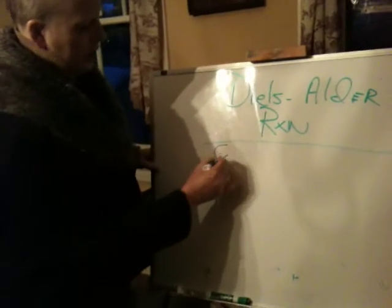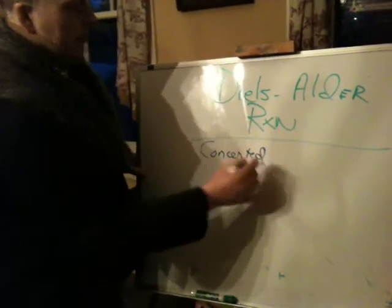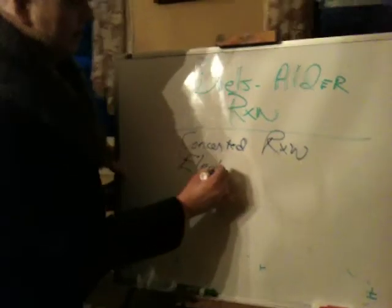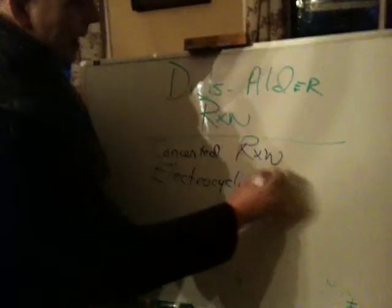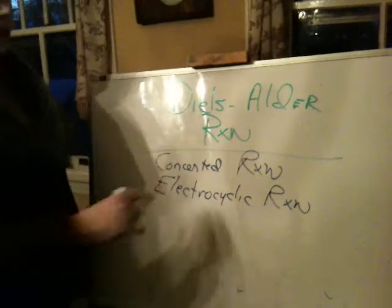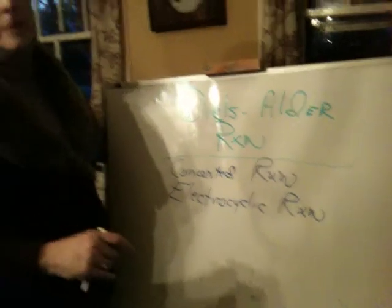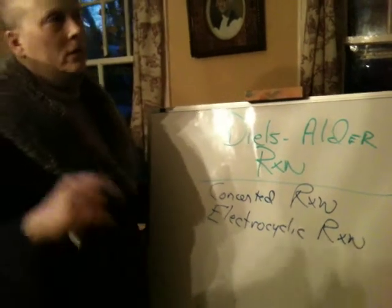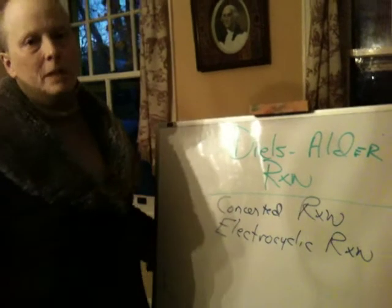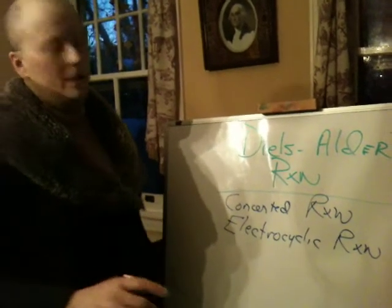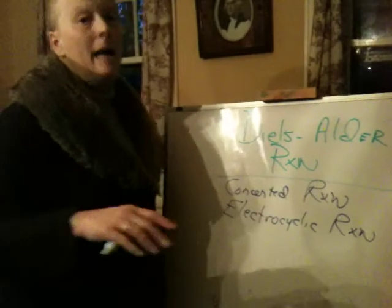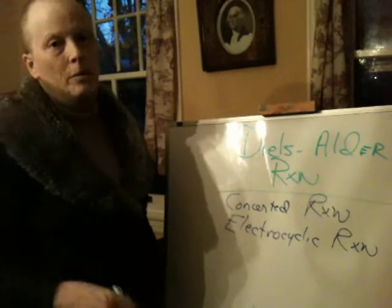The Diels-Alder Reaction is generally considered to be a concerted reaction; it is also called an electrocyclic reaction. What concerted means is that all the bonds break and form at the same time, or approximately. As I've been saying in class, mechanism is really a spectrum — we tend to put mechanisms in very extreme situations, when in reality there's a spectrum of mechanism. Electrocyclic means that electron density, electrons in pi bonds in particular, are cycling around to form new bonds.